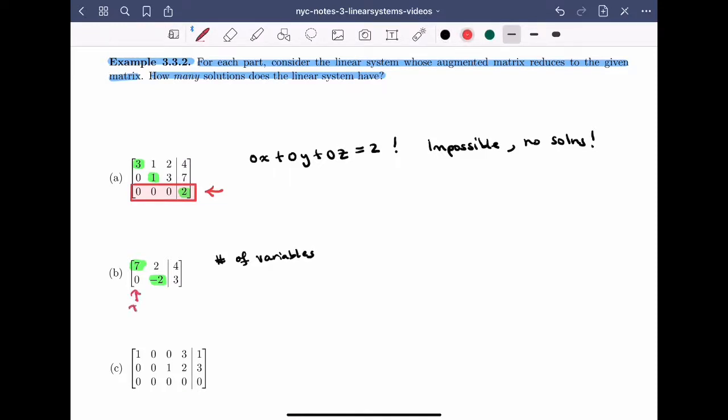In this case, the number of variables of the linear system, I just have to look. There's a variable x, there's a variable y. So the number of variables is 2. And that's exactly equal to the number of leading entries. Therefore, the linear system must have a unique solution.